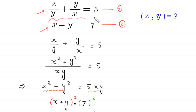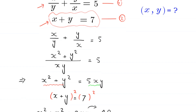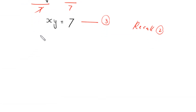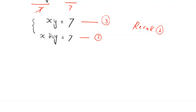We now have a system of two equations: Equation 2 is x plus y equals 7, and Equation 3 is xy equals 7. We solve this system to find the values of x and y.